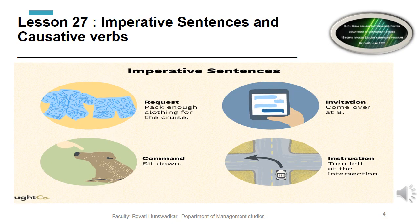Here is an example image of imperative sentences. Request: 'Pack enough clothes for the cruise, please.' Invitation: 'Come over at 8.' Command: 'Sit down,' 'Do not disturb me.' Instruction: 'Turn left at the intersection.' These are the types and parts of imperative sentences.